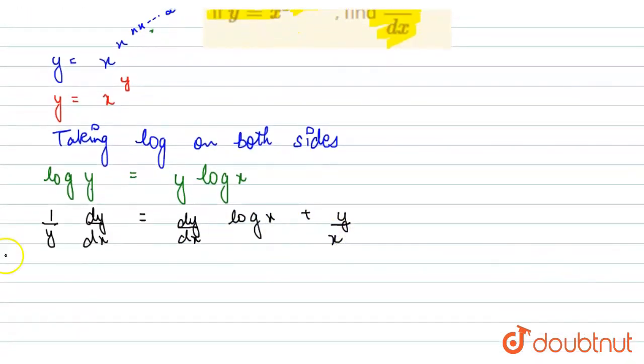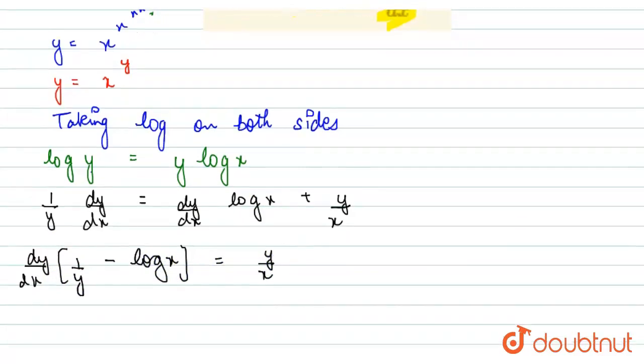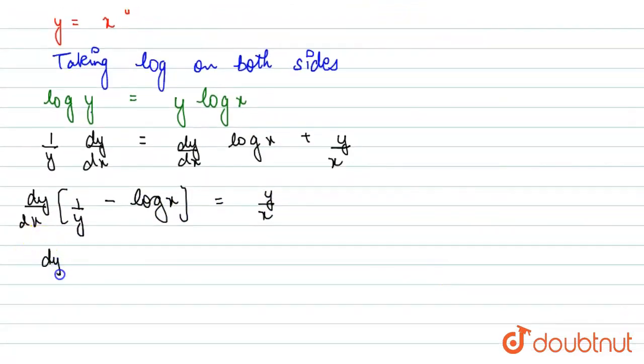So we can factor out dy by dx. 1 by y minus log x comes to this side, equals y upon x. Taking LCM, dy by dx times (1 minus y log x) upon y equals y by x.